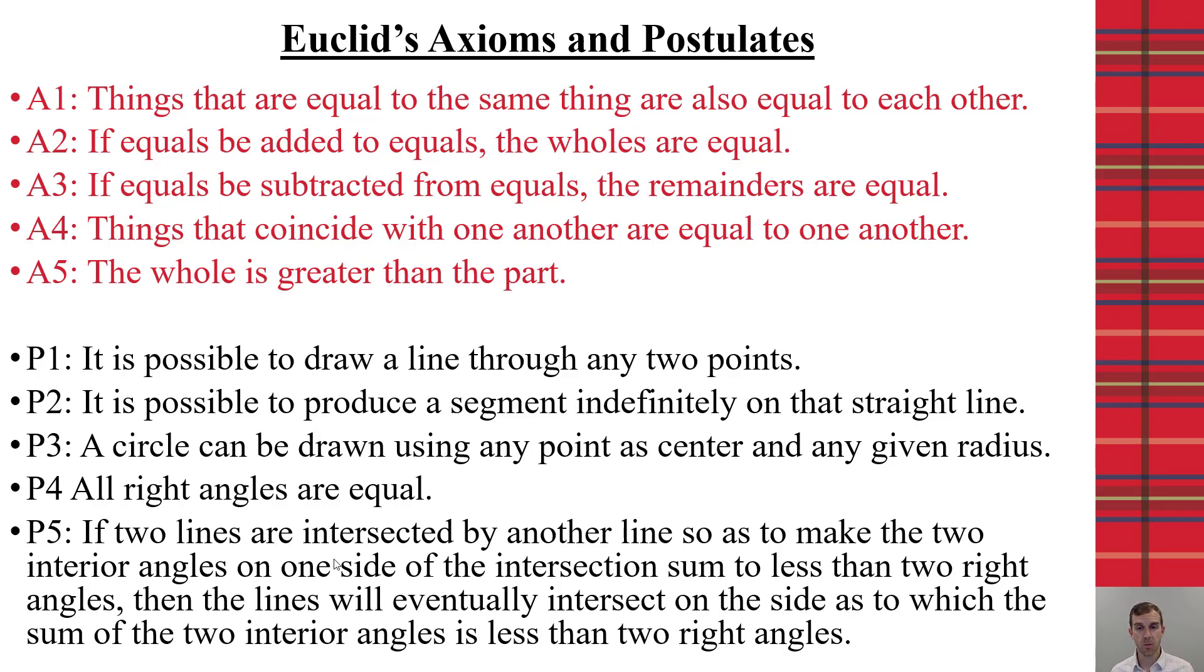And then postulate five is the one that has always been, for millennia, the one that causes controversy. If two lines are intersected by another line so as to make the interior angles on one side of that intersection sum to less than two right angles, then the lines will eventually intersect on the side as to which the sum of the two interior angles is less than two right angles.